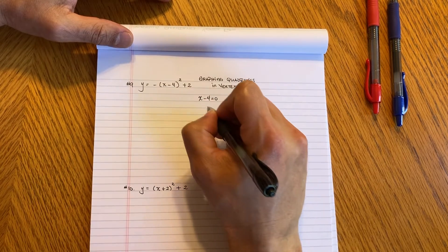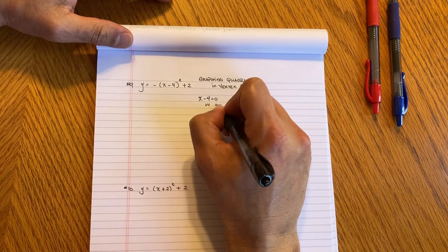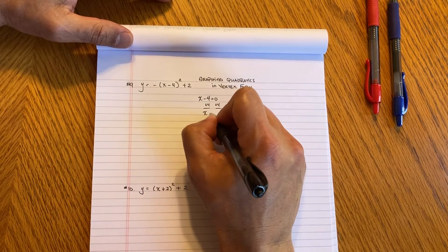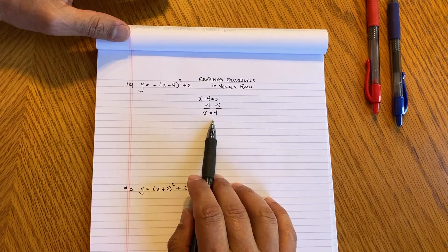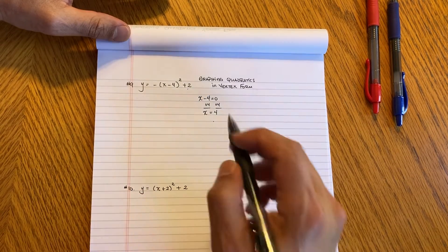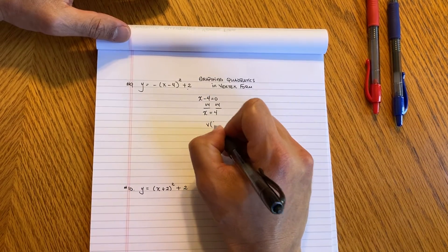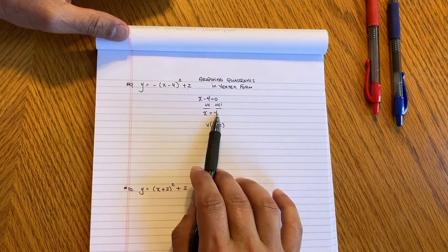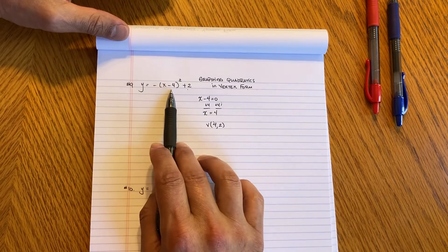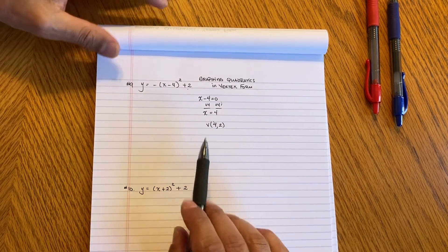Plus 4 plus 4 and so in essence you get X is equal to positive 4. So the X coordinate is 4 and this is your Y coordinate. So in essence your vertex is 4 comma 2. But honestly I don't need to do all this all the time, I just know that whatever is inside here is going to become the opposite so that's my vertex.